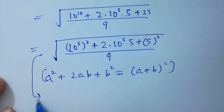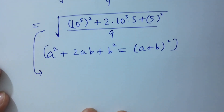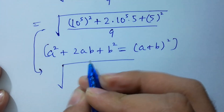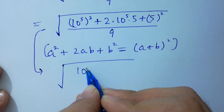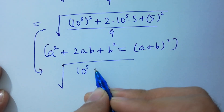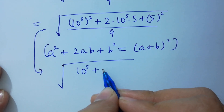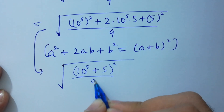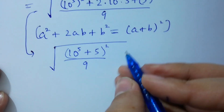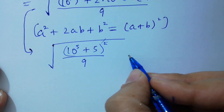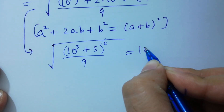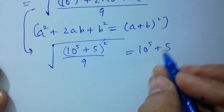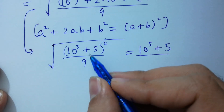You can see this shape: 10 to the power 5 plus 5, squared, over 9. The square root will be cast from the square root sign, giving us 10 to the power 5 plus 5, over square root of 9.